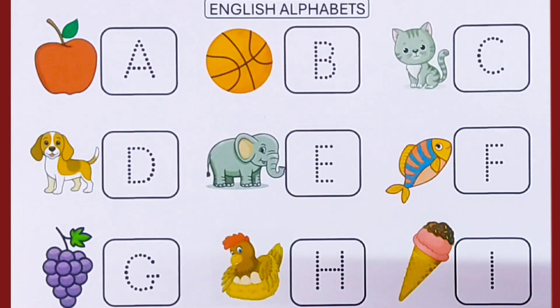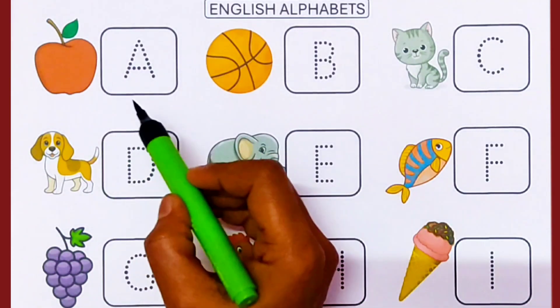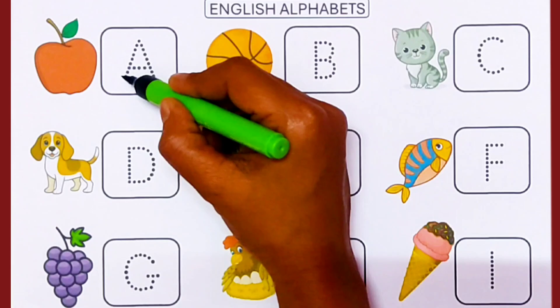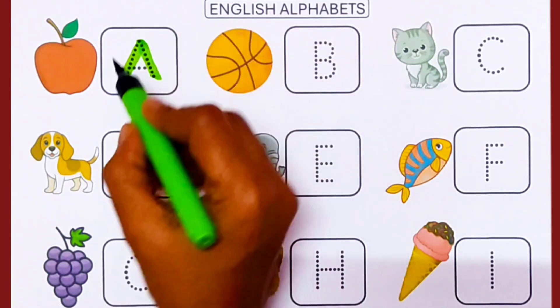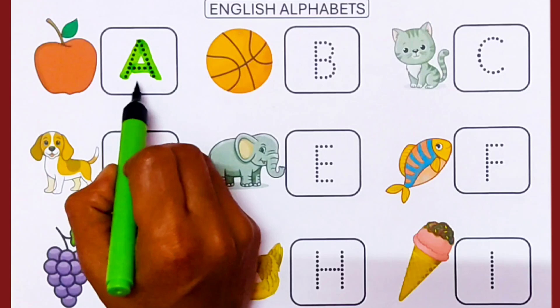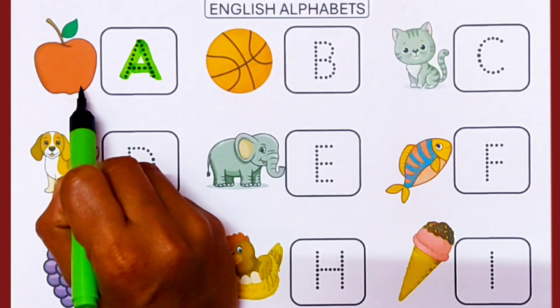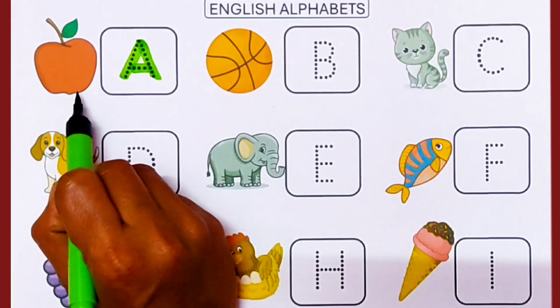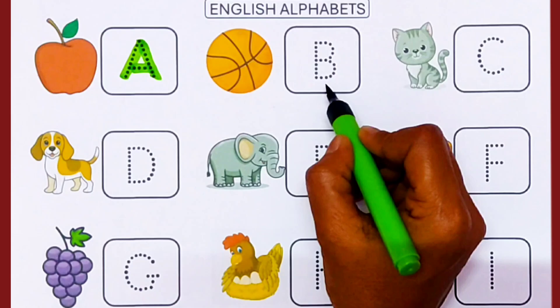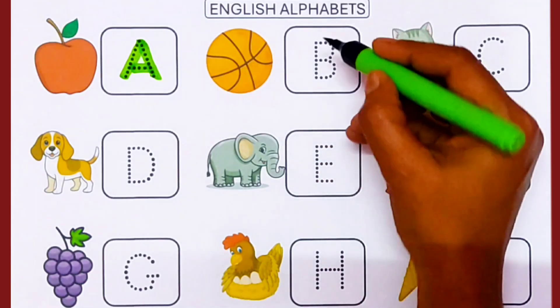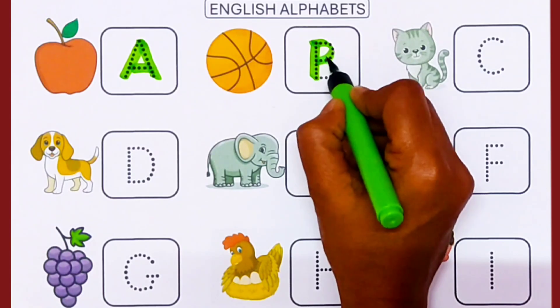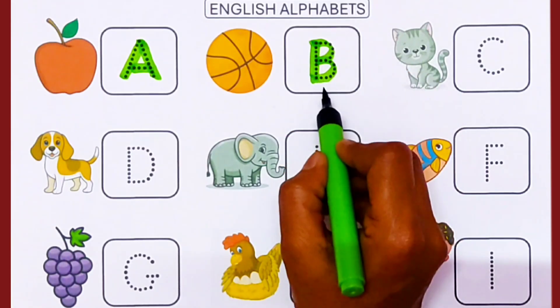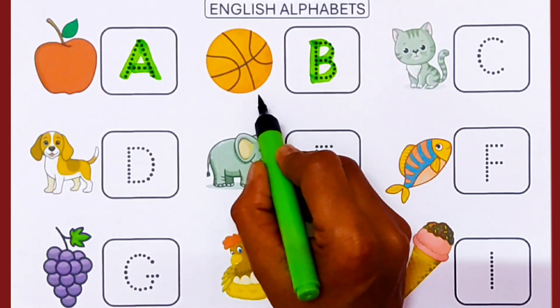English Alphabets. A. A for Apple. B. B for Ball.